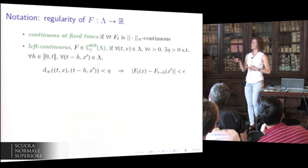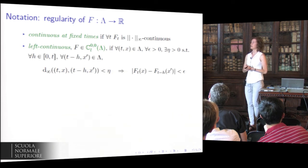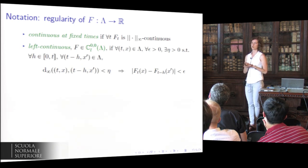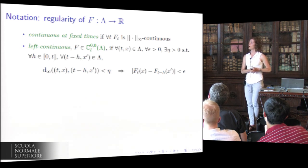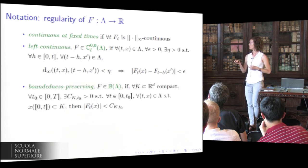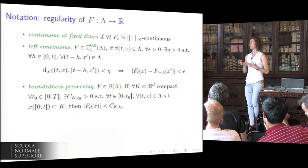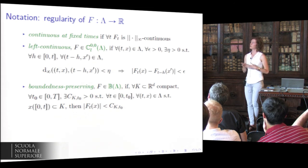Some regularity notation for results to follow: the functional is said to be continuous at fixed times if it is continuous with respect to the sup-norm. It is left-continuous if, for each stopped path, taking another stopped path stopped prior to the other one makes the difference in the functional value small. It is boundedness-preserving if, for each compact set, there exists a constant bounding the functional value for each path whose image lies inside the compact.